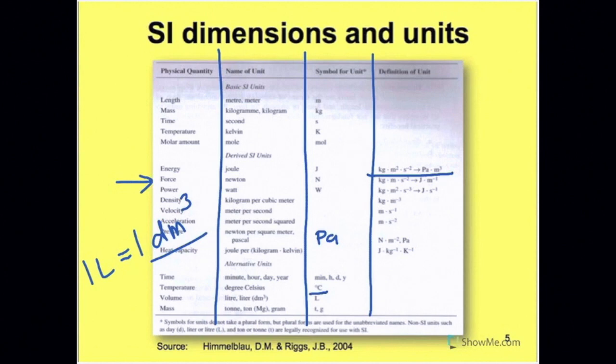And for mass, instead of the kilogram, we have the ton. T-O-N-N-E is the British spelling, while T-O-N is the American spelling, and the gram.